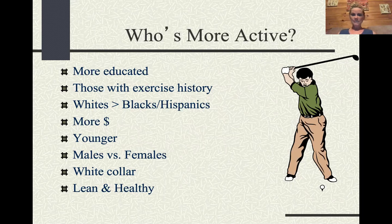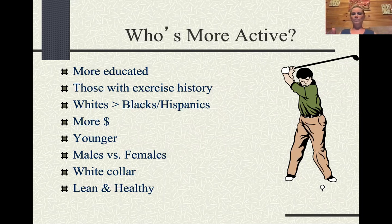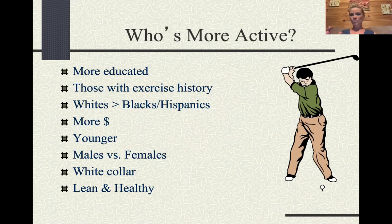White individuals in the United States are more physically active than Black and Hispanic individuals. People with more money are more likely to afford gym memberships, golf, home equipment, and active vacations. Younger individuals tend to be more physically active than older ones, though my colleague Dr. Abby King has devoted her career to getting older individuals — even nursing home residents — exercising.